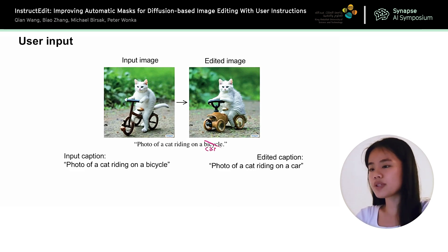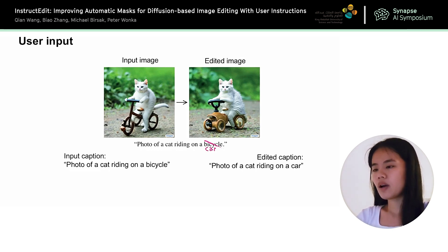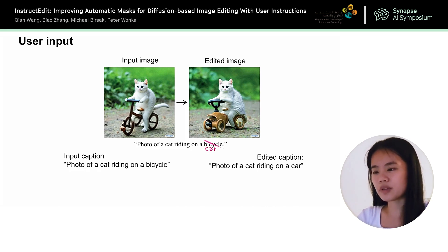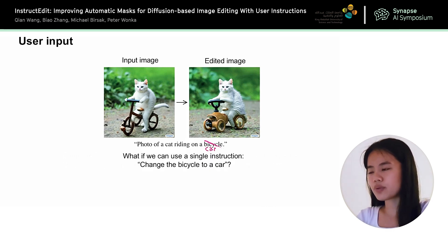So besides the input image, what is the user input for prompt-to-prompt and DiffEdit? On the left hand side, there is an input caption, which is a description of the input image. On the right hand side, there is an edited caption, which is a description of the editing image. For each editing case, users need to provide these two captions to describe the edit. But is there another way for the user to describe the edit? We could use a single instruction, such as 'change the bicycle to the car,' because instructions are more intuitive for users to provide.